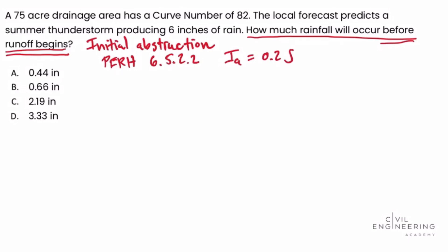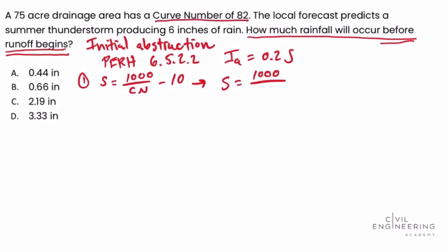In that same section 6.5.2.2, we're given an equation for S, which is the maximum basin retention in inches. S is equal to 1000 over the curve number minus 10. The first step is solving for S using what we're given in the problem statement: S = 1000 divided by 82, minus 10.